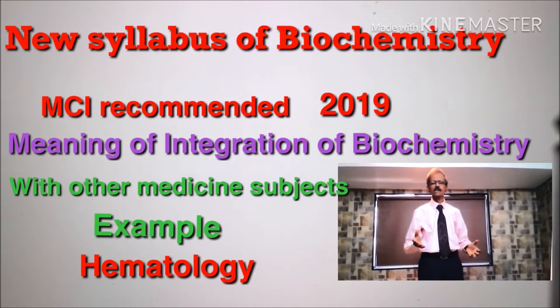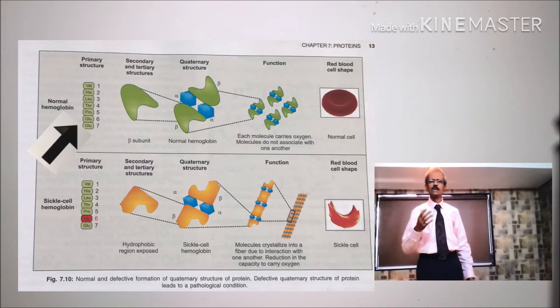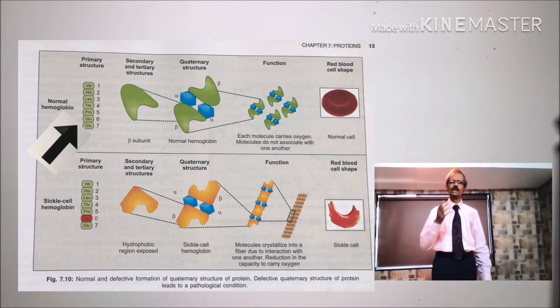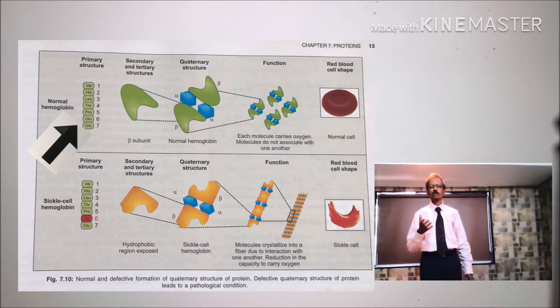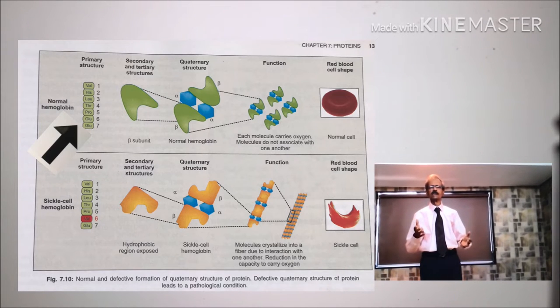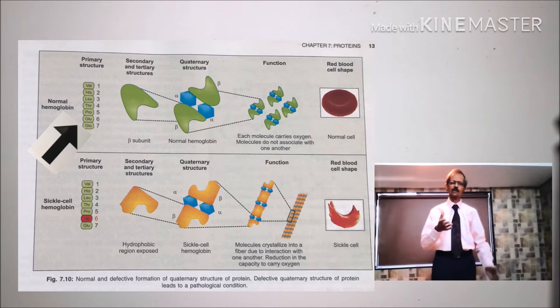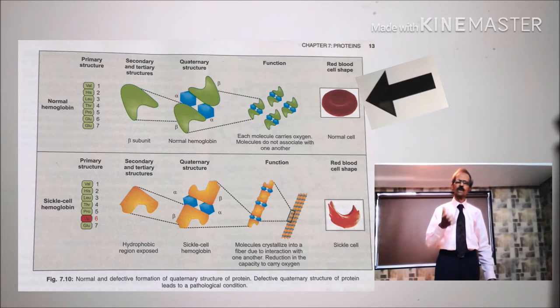Just see the upper part of this figure. This indicates normal hemoglobin synthesis, which ultimately leads to normal formation of red blood cells.